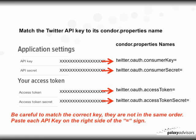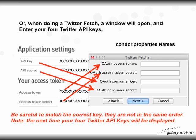To be very clear about what key goes with what entry, match the Twitter API key to its ConorProperties name: the API Key is the Consumer Key, the API Secret is the Consumer Secret, the Access Token is the Access Token, and the Access Token Secret is the Access Token Secret. Paste each key on the other side of the equal sign in the ConorProperties file. Another option is when doing a Twitter fetch — a window will open where you can enter your four Twitter keys directly in the Twitter Fetcher window. Again, be careful to match the correct key with the correct entry on the form.